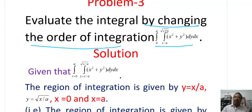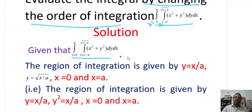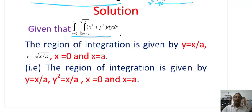If we observe this integral, it is in terms of x variable, so this is the y limit. y goes from x/A to root over x/A, and the other variable x goes from 0 to A. The integrand is x² + y², dy dx.